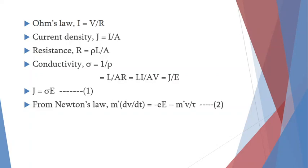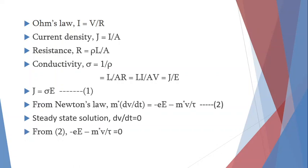Considering this as equation number 2, the steady-state solution sets dV/dt = 0, meaning velocity is constant and acceleration is zero. Substituting dV/dt = 0 into equation 2 gives: −eE − Me*V/τ = 0. Rearranging, we get drift velocity Vd = −eτ/Me* × E, where E is the electric field. The negative signs cancel when rearranging, giving this expression for drift velocity.